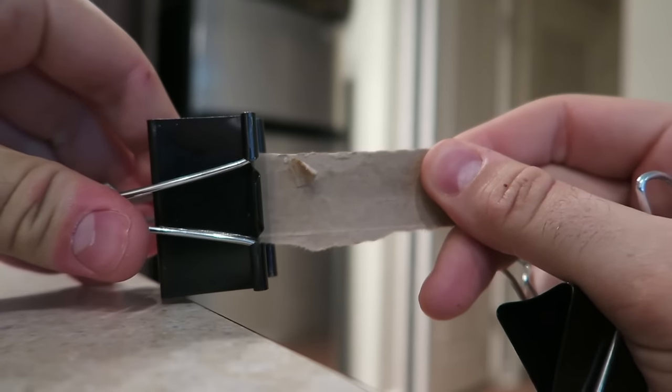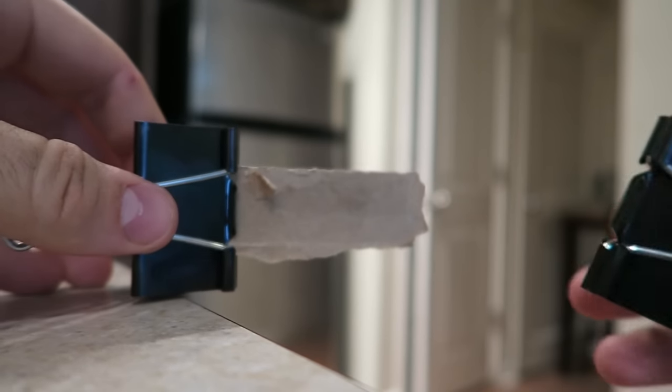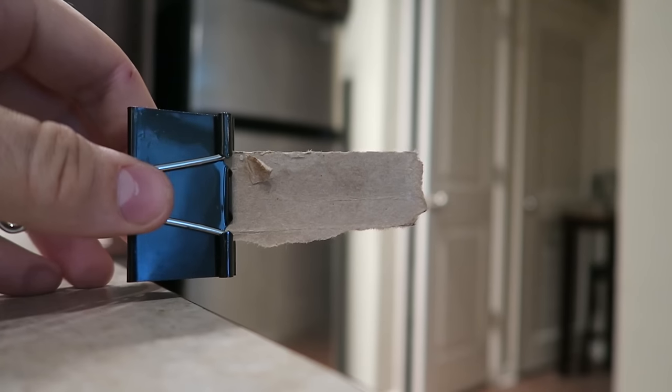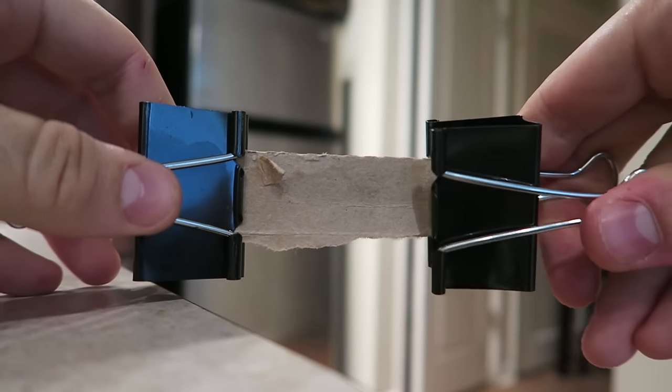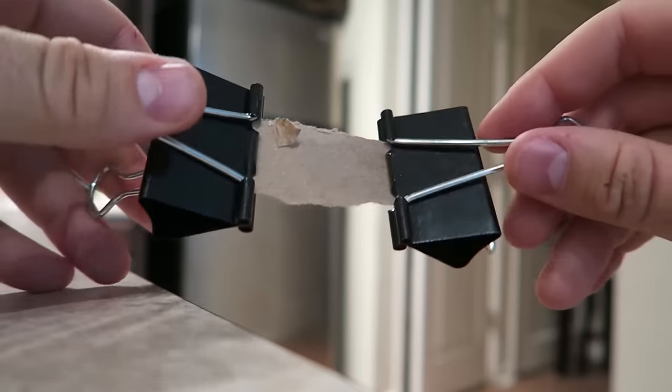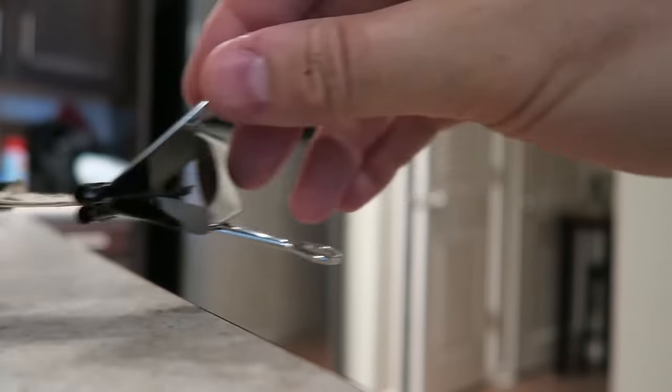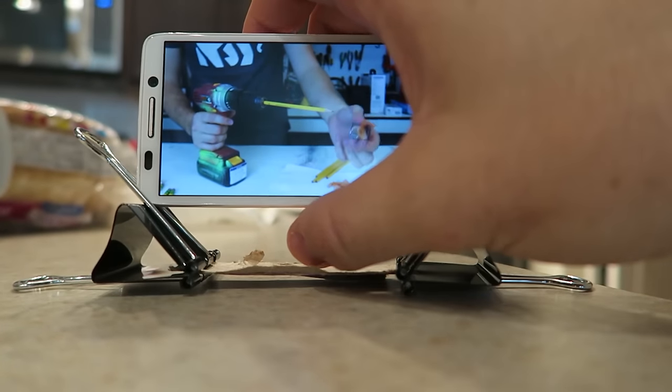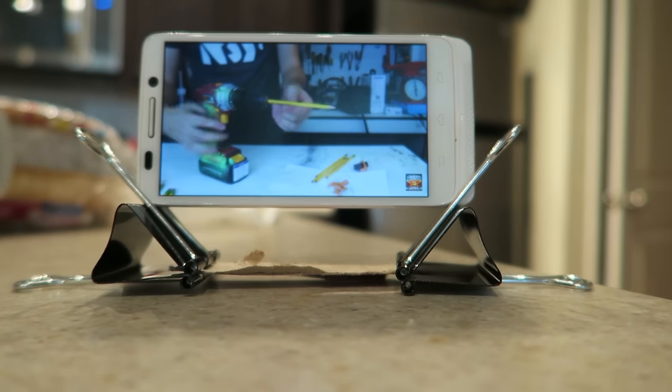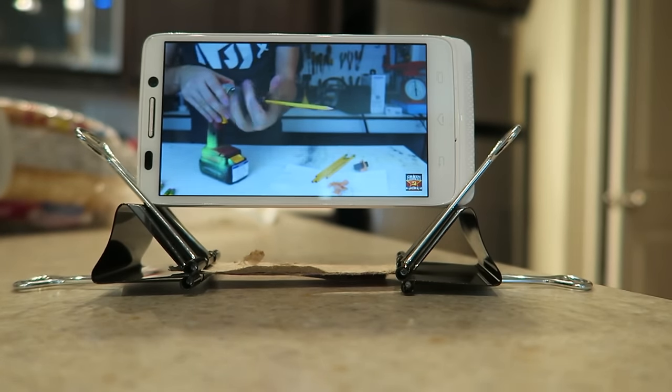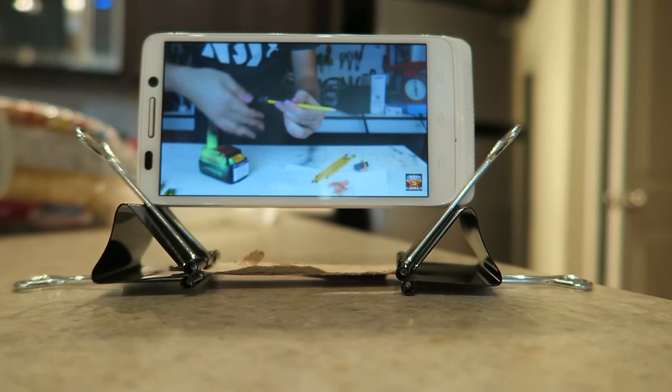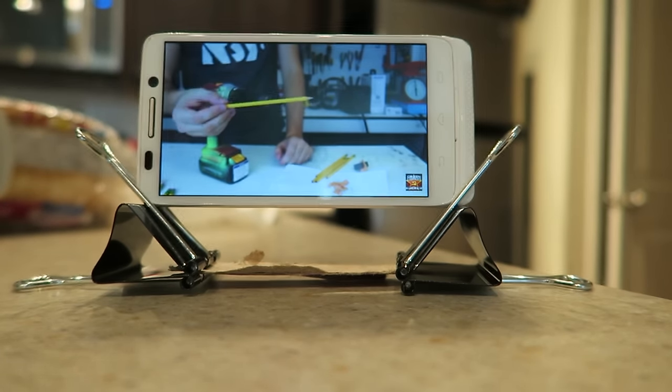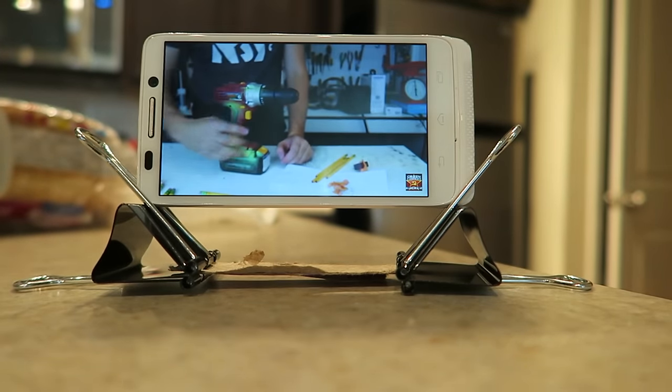For this life hack, we're going to need two binder clips and just a piece of paper, any kind of paper. Just hook it up like that. Boom. Simple as that. Then we're going to set it on a table, and guess what we got. Now I'm going to put my phone here, and now I have my perfect phone holder. I can watch videos on YouTube without hands. So, perfect. What do you guys think?